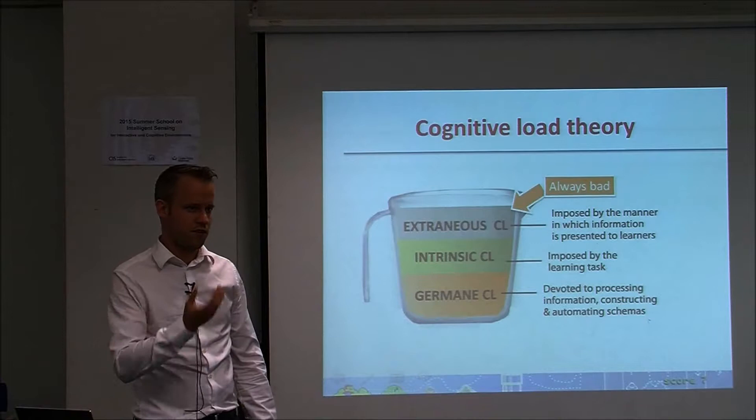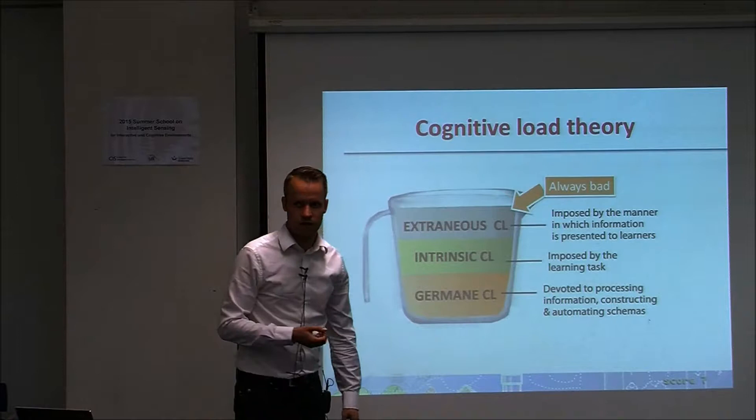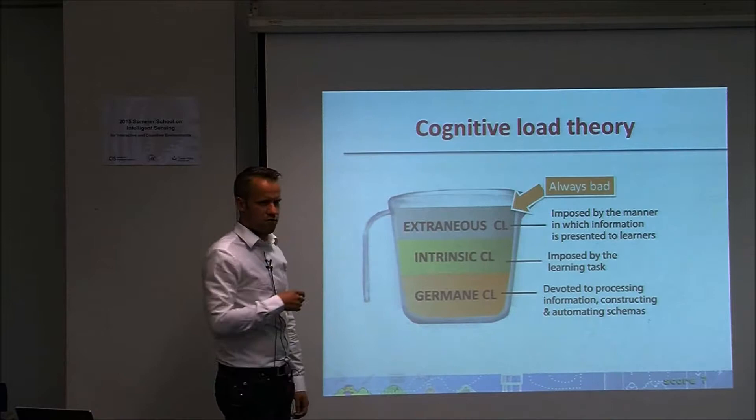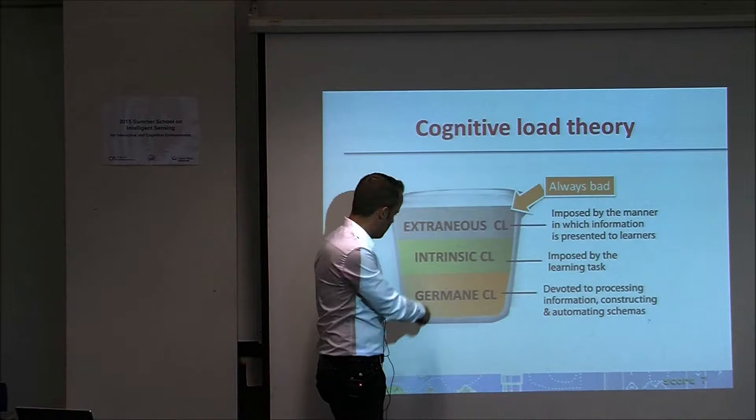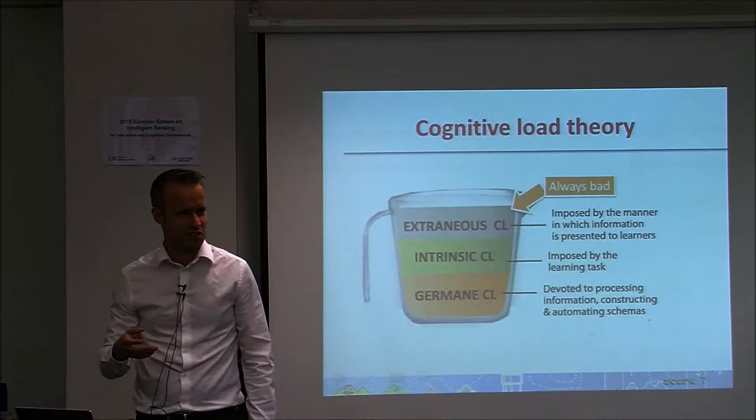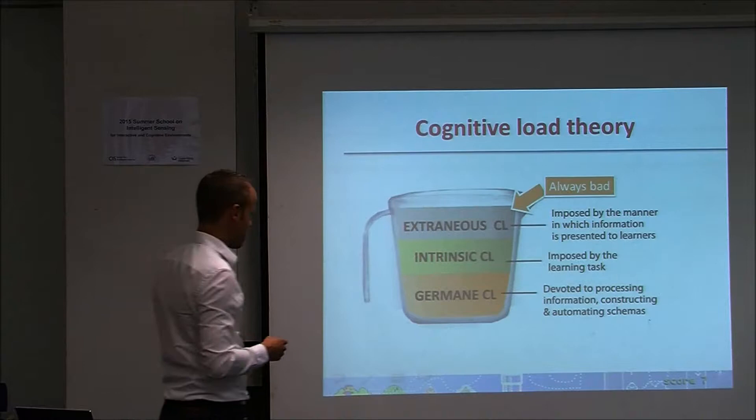In general you could say extraneous cognitive load is always bad — you want as much germane as possible and as little extraneous as possible. That's the theory, something we thought we could work with. But if some of you are very perceptive, you might say this is actually a bit of a strange theory. Extraneous cognitive load is bad — that's circular: it's bad because it's extraneous and it's extraneous because it's bad. So this doesn't really mean anything, and can you really separate these two? No, you can't. Halfway into my dissertation, luckily I had another theory to latch on to because this one was starting to become a little less used.